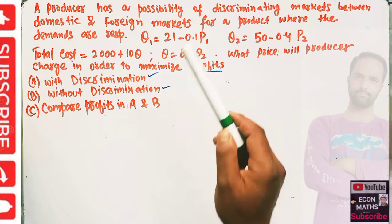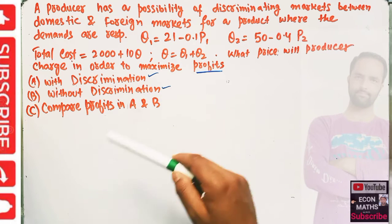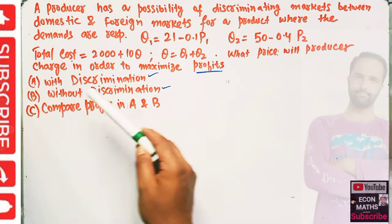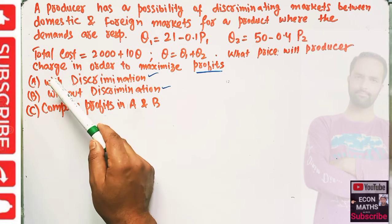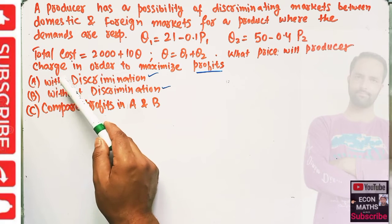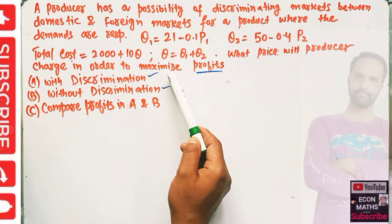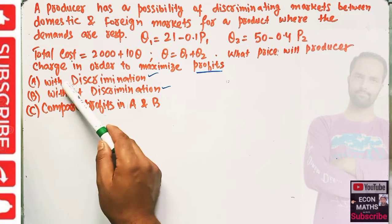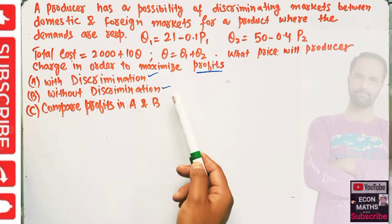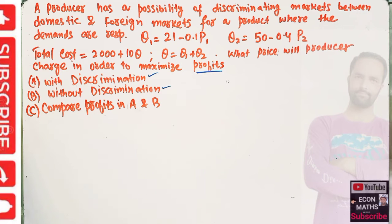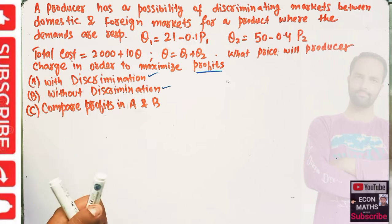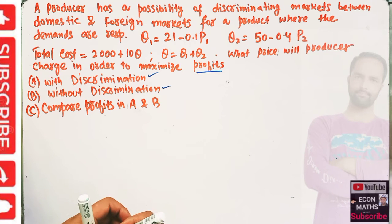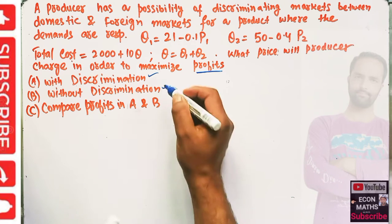We need to find what price the producer will charge to maximize profit. The first situation is with discrimination, the second is without discrimination, and we have to compare the profits in both situations. Let's take the first case, when he discriminates.